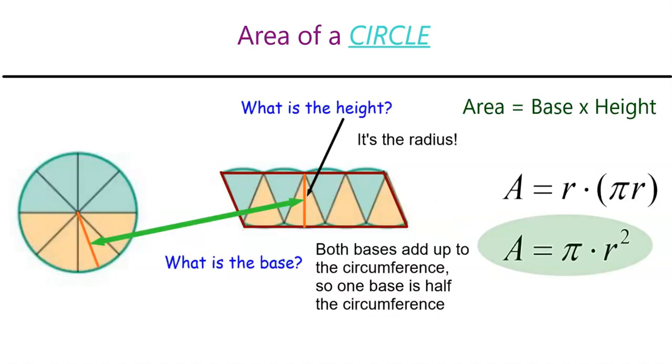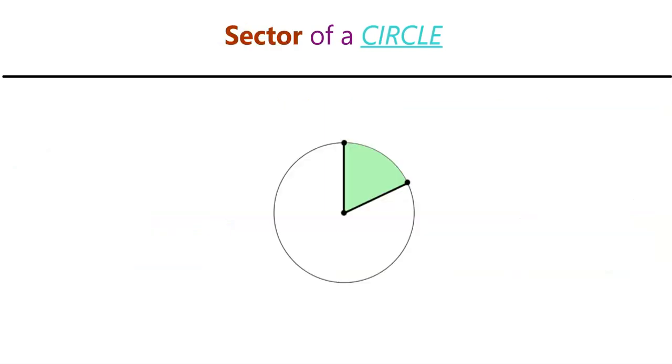What we're talking about is something called a sector of a circle, and a sector of a circle is just an area that is bounded by two radii. In this diagram, the sector is what is colored in green. That is called the sector of a circle.